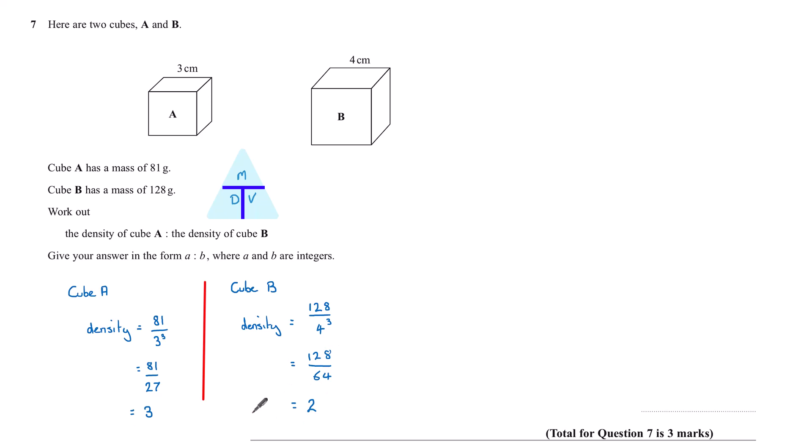And so now I've got two integers for the density of cube A to cube B. And so in the form A to B, my answer is 3 to 2.